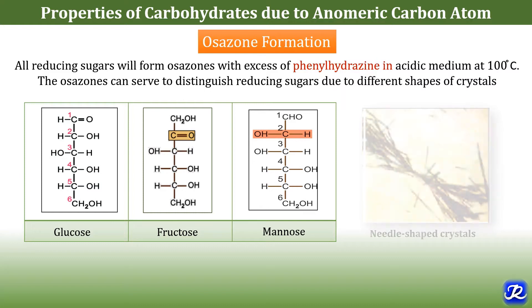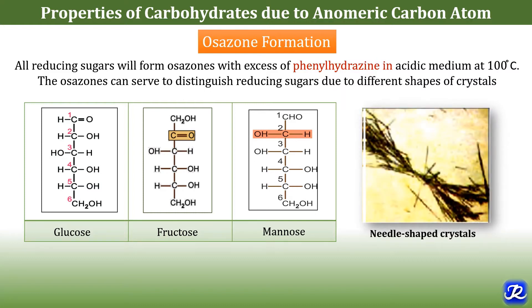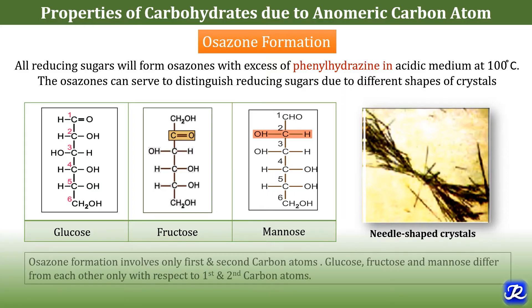Glucose, fructose, and mannose all form needle-shaped crystals. Why do they form similar crystals? Because osazone formation involves only the first and second carbon atoms. In the structure, glucose, fructose, and mannose differ from each other only with respect to the first and second carbons. Since these carbons are involved in osazone formation, the difference is masked, and that is why the osazone crystals of glucose, fructose, and mannose are identical.